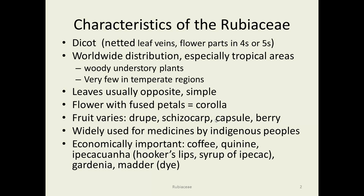Characteristics of the Rubiaceae: they are dicots. They have a worldwide distribution, but especially in tropical areas. These tend to be woody, understory plants, with very few of them naturally occurring in temperate regions.